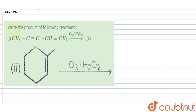Hello. The question is: write the product of the following reactions. First is when this alkyne reacts with O3 in the presence of H2O2, and the second one is the cyclic alkyne reacting with O3 in the presence of H2O2.